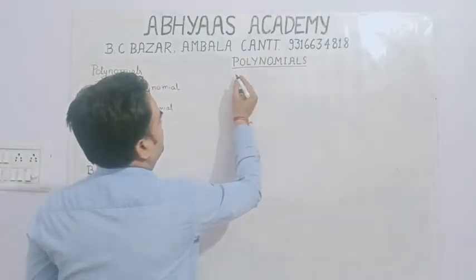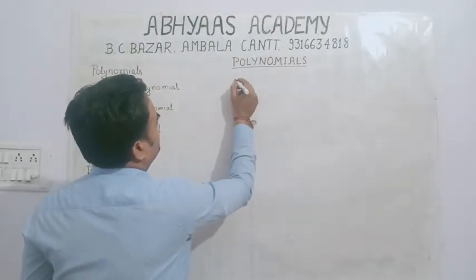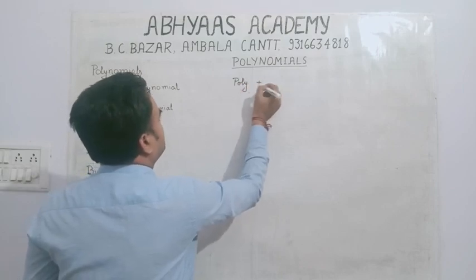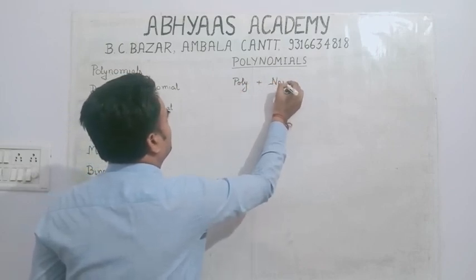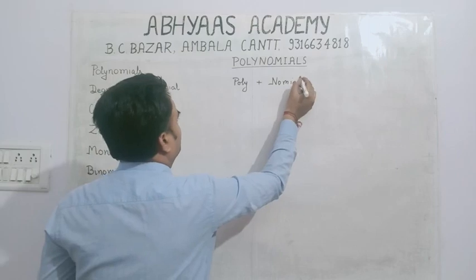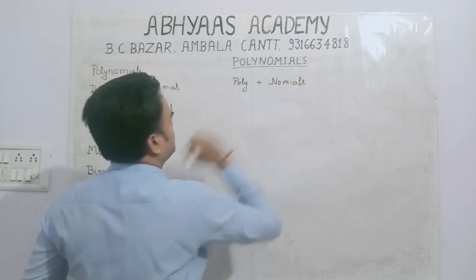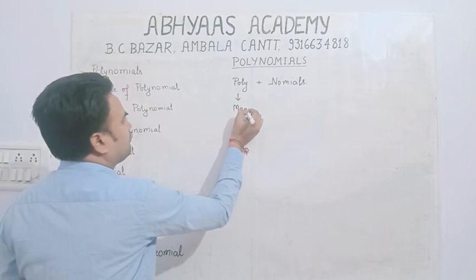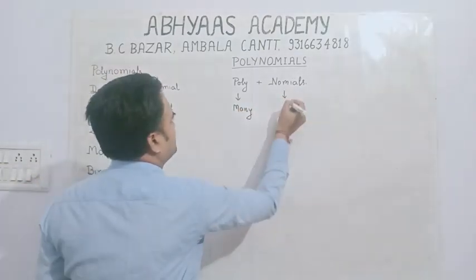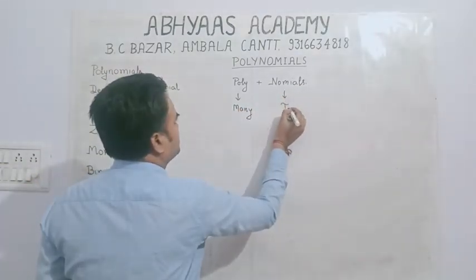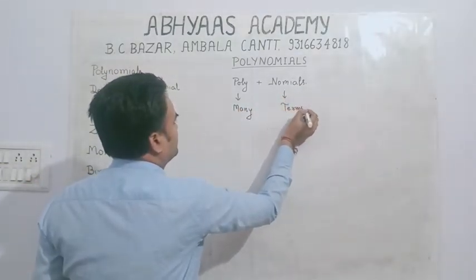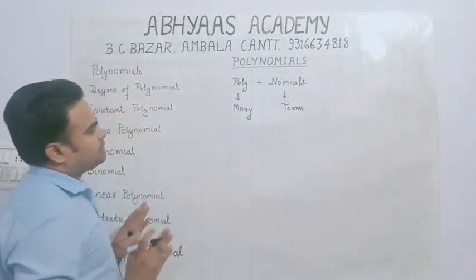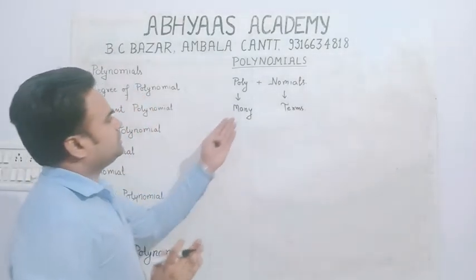Polynomial kya hai? Polynomial is made by two terms — 'poly' and 'nomials.' Poly means many and nomials means terms. So polynomial is an algebraic expression which means many terms.